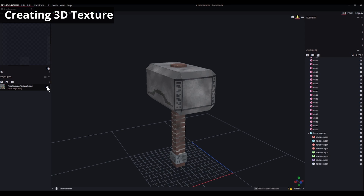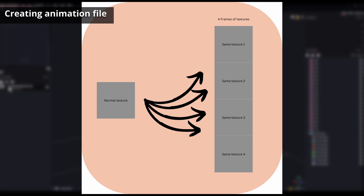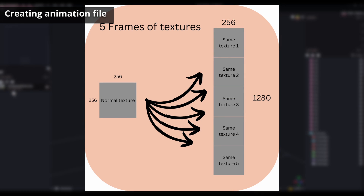Let's save it and now let's do the animation part. How does it work? Minecraft searches for frames. What we're going to do is duplicate these textures as many frames as we'd like, vertically. For example, if I want 5 frames and my texture is 256 pixels wide, I'll need a texture with dimensions of 256 by 1280. That way we have the texture 5 times vertically, and each one will be a frame.